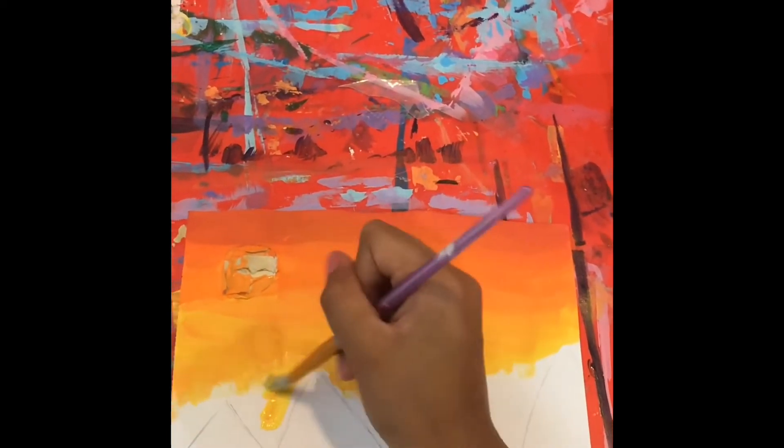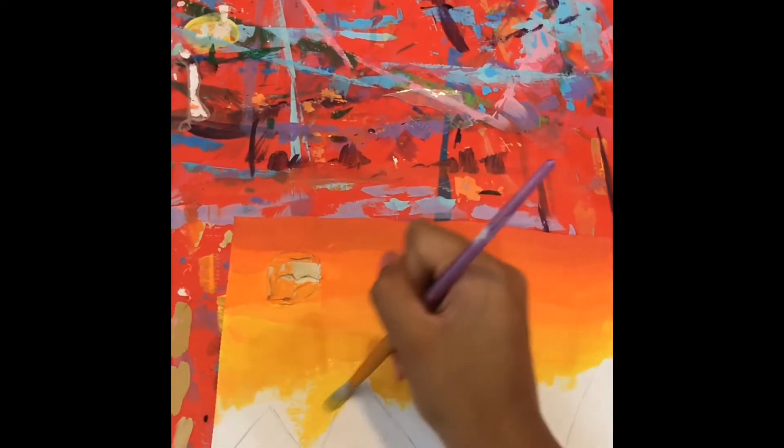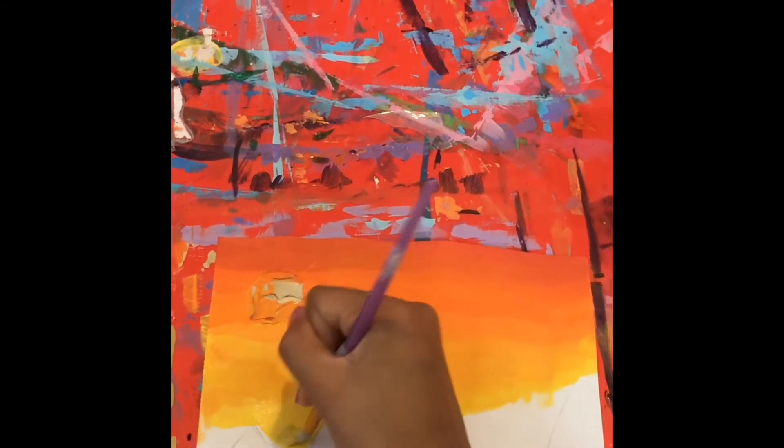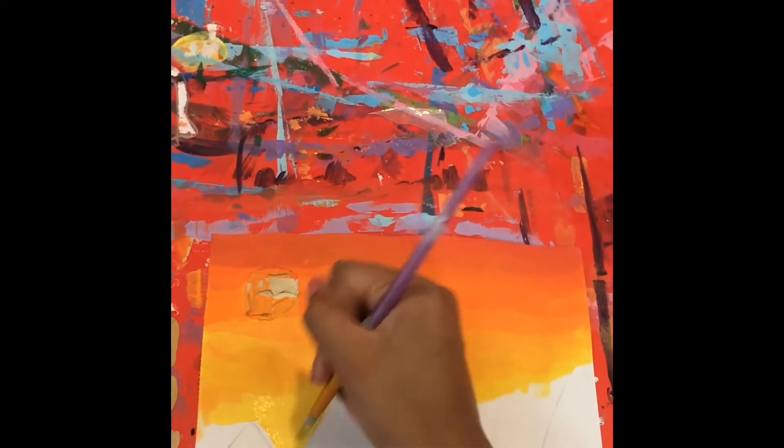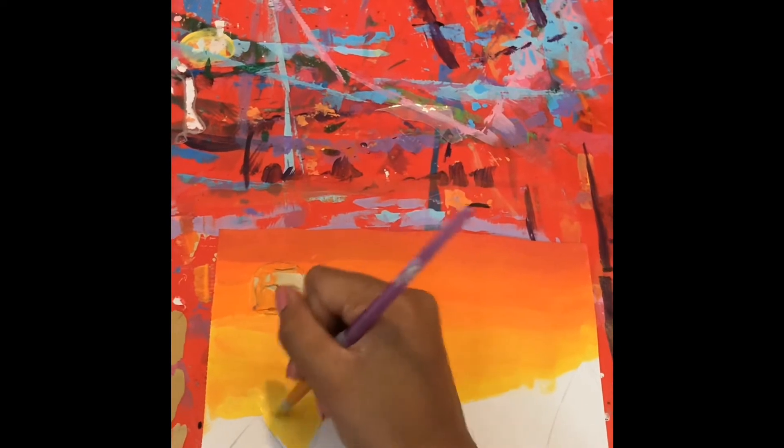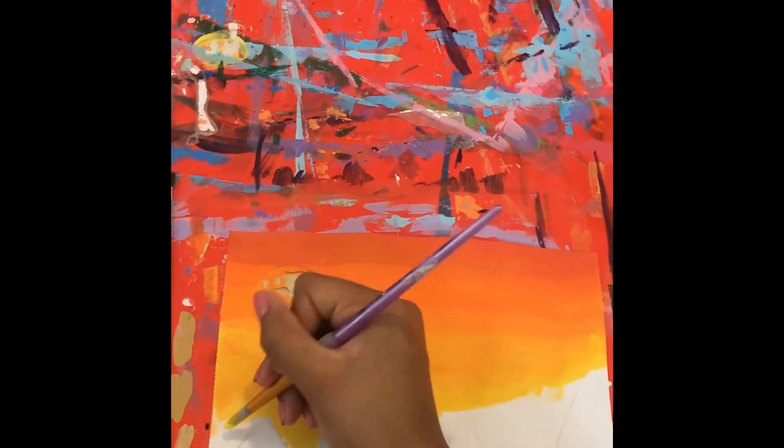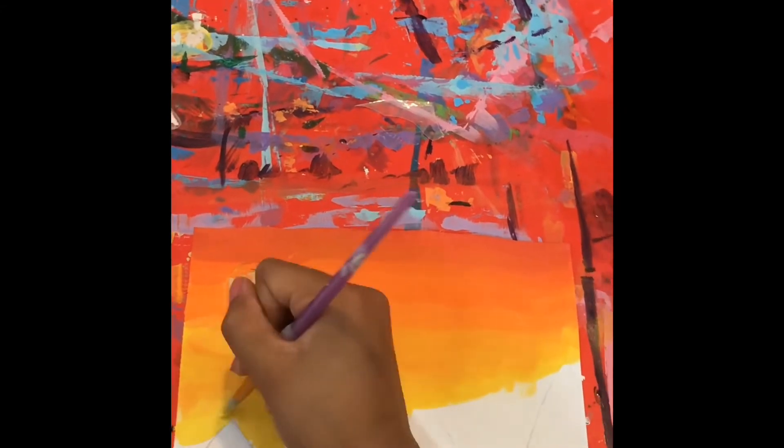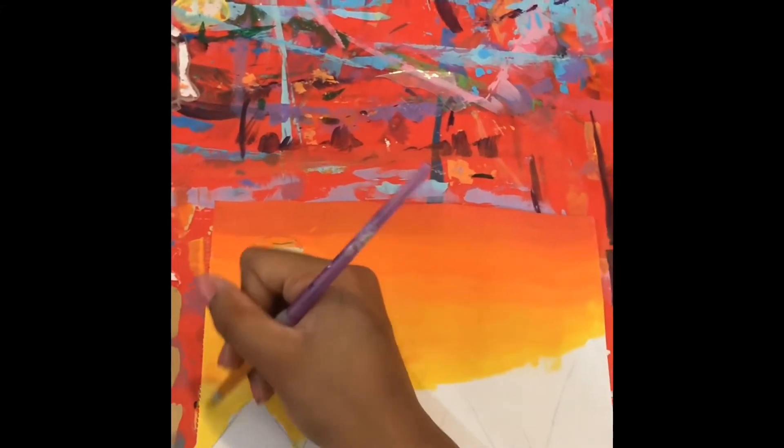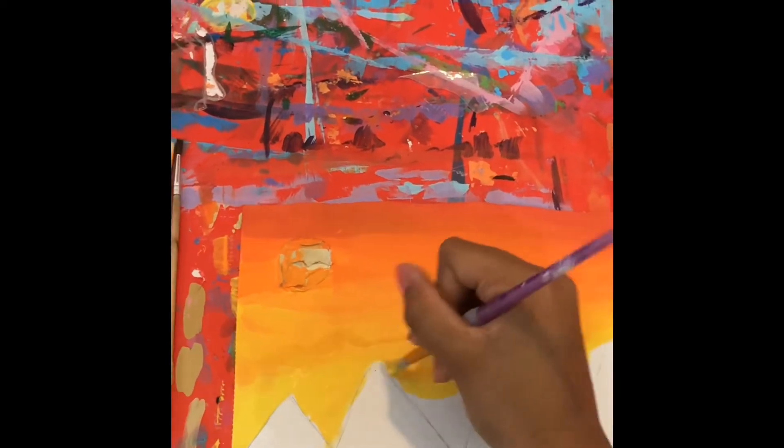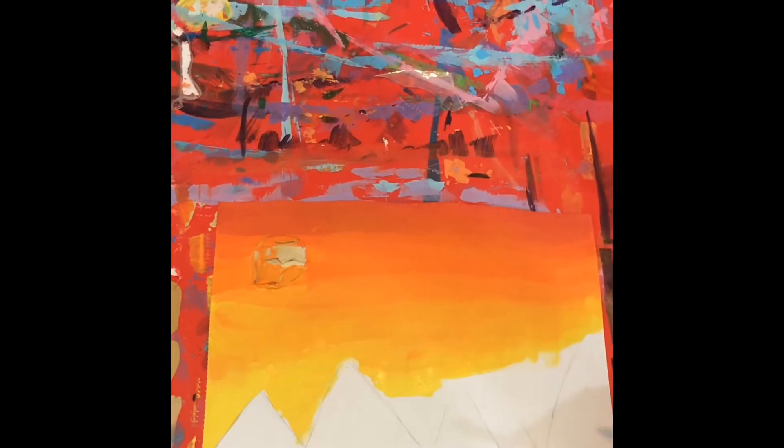Make sure you're painting in one direction so it doesn't look weird. Now you want to get rid of the orange tint in the yellow and use just yellow. Then you want to do that to the rest of the mountains.